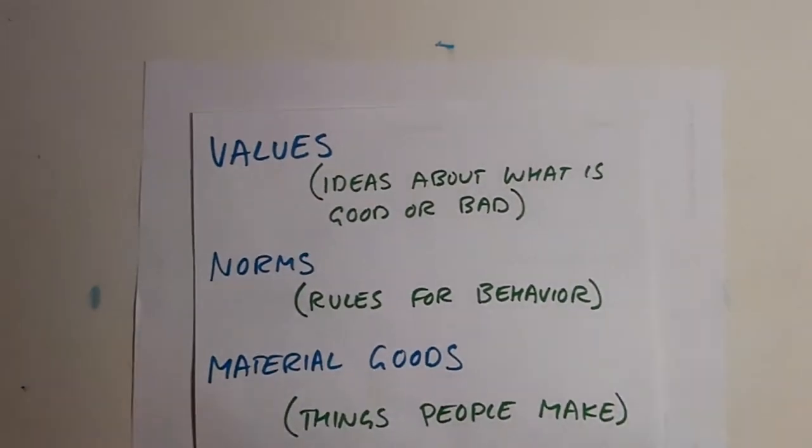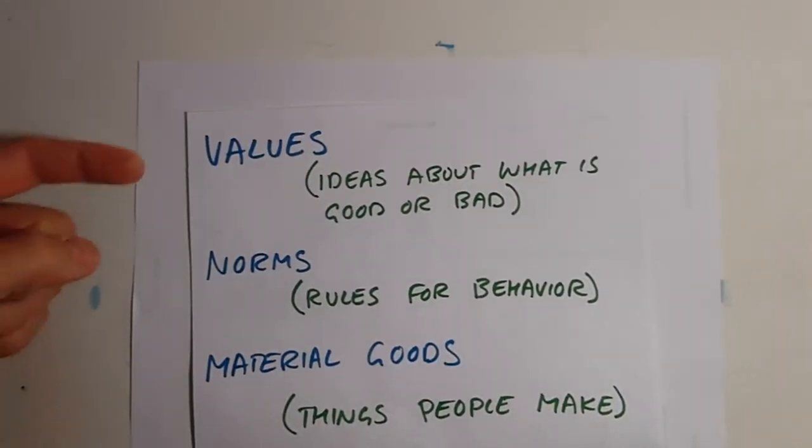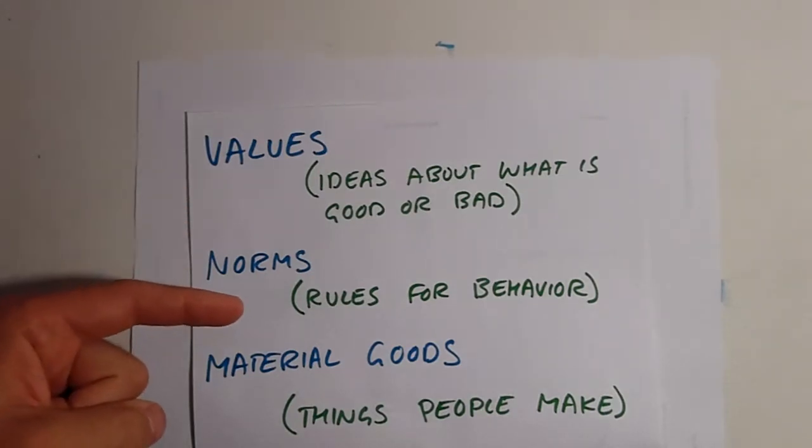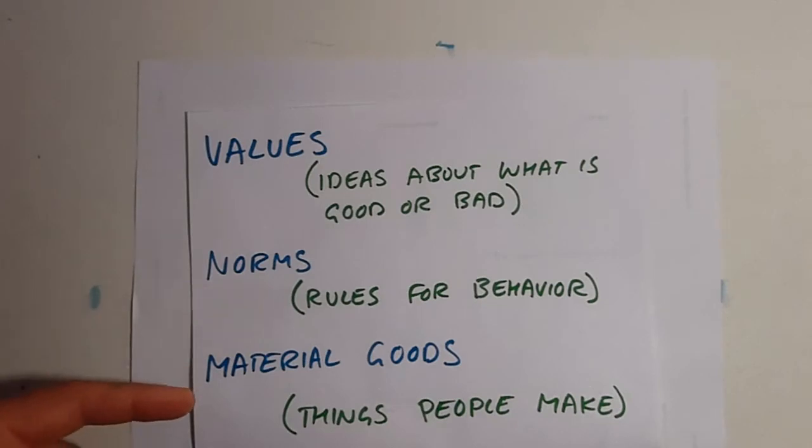A definition that you'll often see in 101 textbooks for sociology describes culture as the values, norms, and material goods of a society. By values, we mean ideas about what is good or bad. Norms refers to the rules for behavior within a society, and material goods refers to the things that people make.